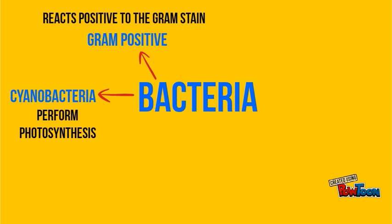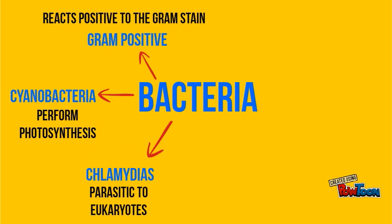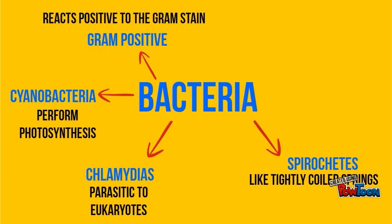Chlamydia: these are parasitic bacteria that live inside eukaryotic cells. Spirochetes: these bacteria are shaped like tightly coiled springs. Some help cows digest grass, while others cause syphilis and Lyme disease.